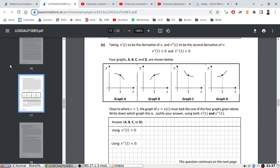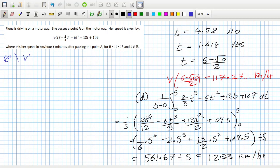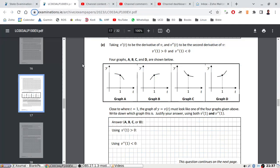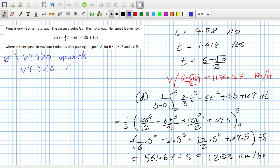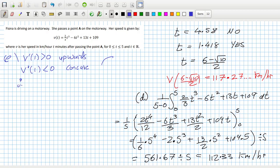Part E: Taking V' to be the derivative of V and V'' to be the second derivative. Four graphs A, B, C, D are shown close to where T is 1. The graph of V(t) must look like one of the four graphs above. If V'(1) is positive, that means it's going upwards. And if V''(1) is negative, that means it's concave. So I'm looking for something upwards and concave. That's only graph B. Therefore, graph B.